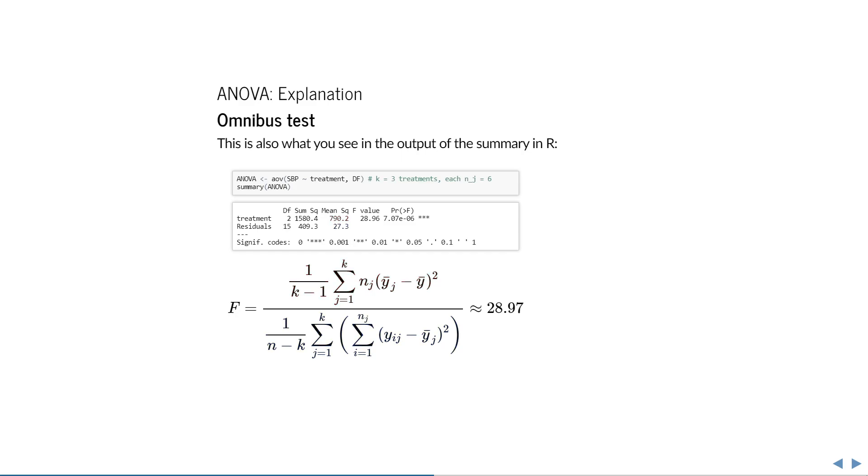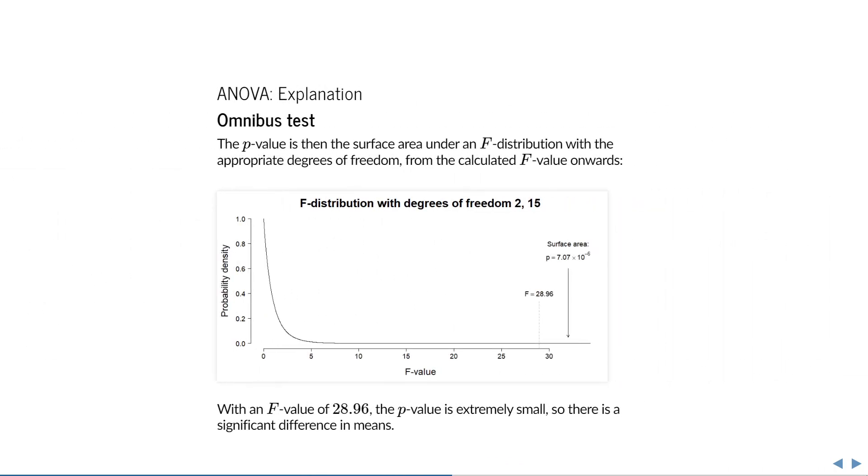The only question that remains is how to calculate a p-value from that. Much like the t-test, the chi-square test, or any other test really, this is equal to the surface area under the test statistics distribution from the calculated value onwards. This turns out to be around 0.00007, or in other words, really small.